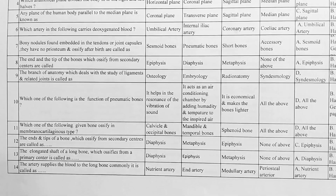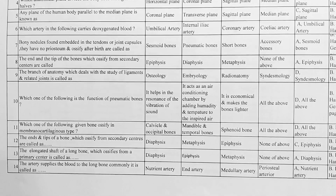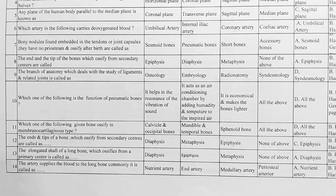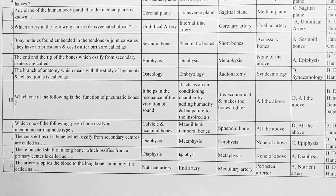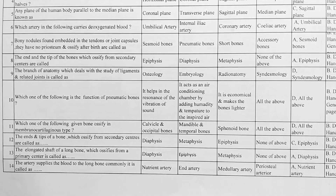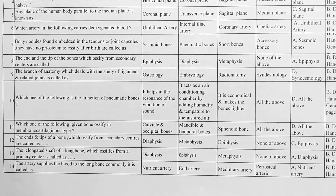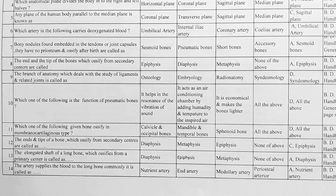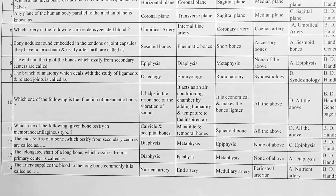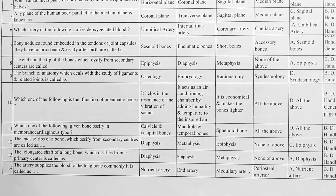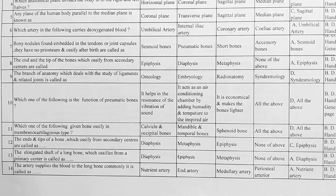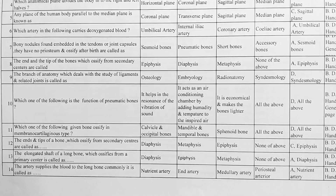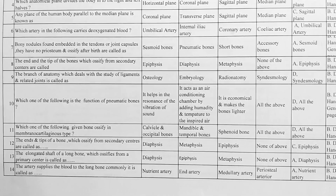Next, which one of the following is the function of pneumatic bones? Options: A. it helps in the resonance of the vibration of sound, B. it acts as an air conditioning chamber by adding humidity and temperature to the inspired air, C. it is economical and makes the bones lighter, D. all of the above. Correct answer is D, all of the above.